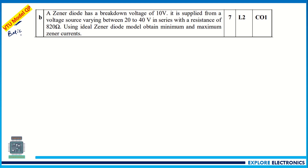Zener diode as voltage regulator can be asked to explain how it is going to work, or a problem like this on zener diode can also be asked. The problem states: zener diode has a breakdown voltage of 10 volts — this is the voltage across the zener diode — and it is supplied from a voltage source varying between 20 to 40 volts, in series with a resistance of 820 ohms. Using the ideal zener diode model, obtain minimum and maximum zener currents.